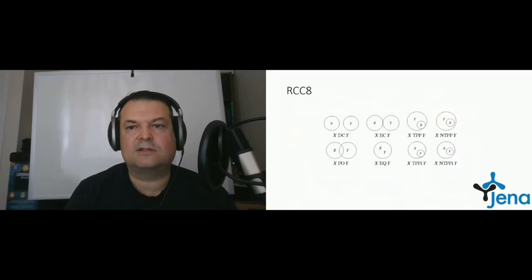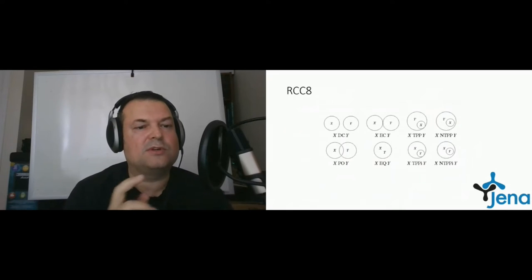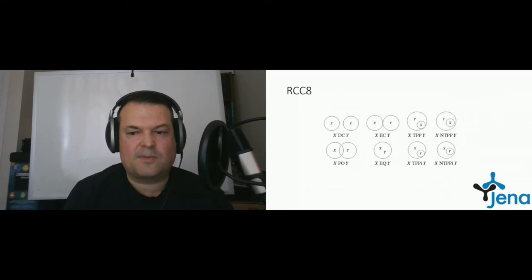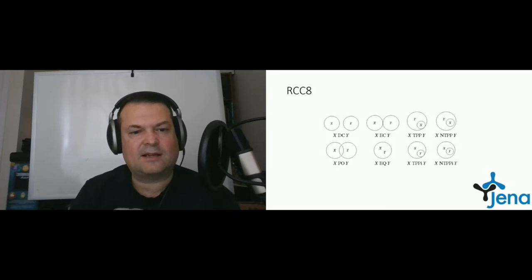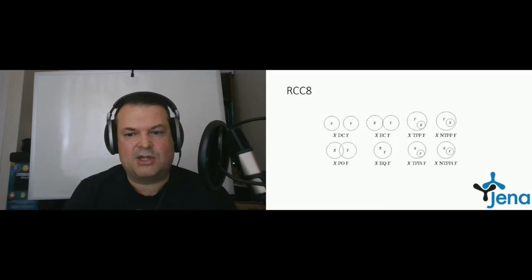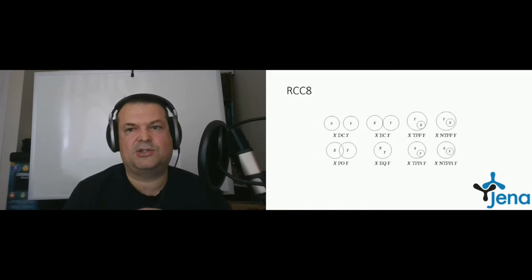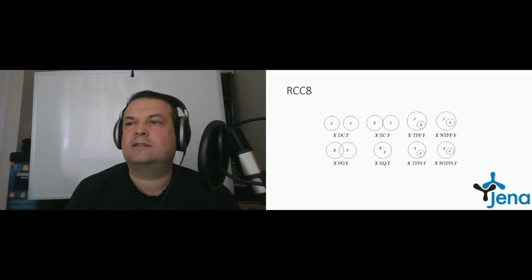The third family is the Region Connection Calculus, RCC8, which gives us the relation between two spatial features: they can be disconnected, externally connected, there is the tangential proper part, the tangential proper part inverse, partially overlapping, and equal — meaning two spatial features exactly cover each other. We also have the non-tangential proper part and non-tangential proper part inverse relationships in RCC8.